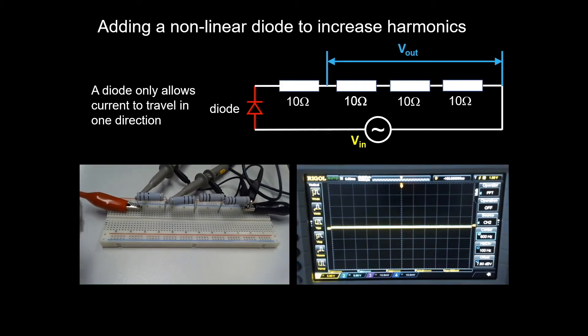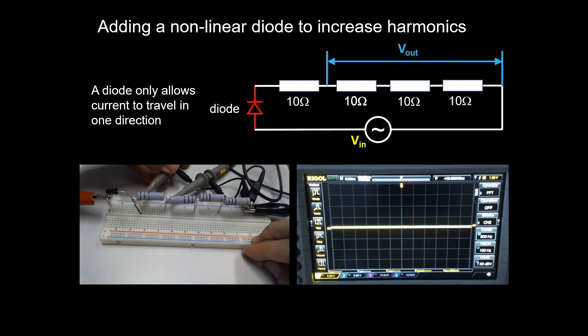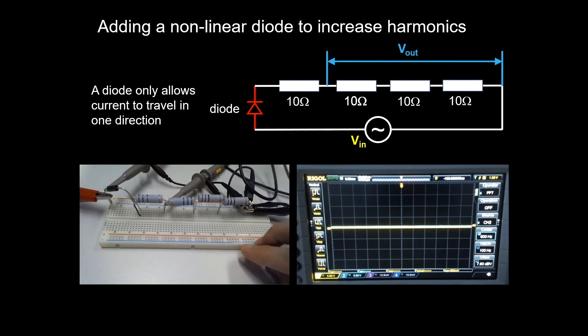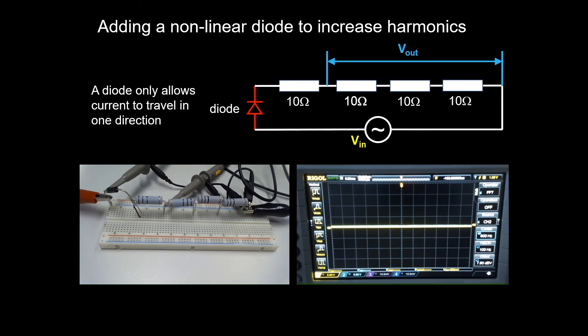We will now add a diode to the system to see how it will change the output voltage. Probe number one is still the input voltage. This is the voltage profile with the diode and the resistors. The input voltage is the one with the yellow line, the output voltage is the blue one.